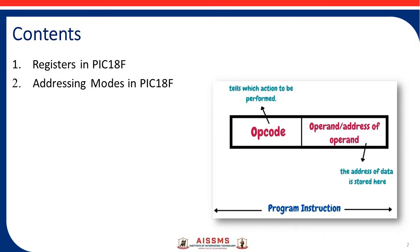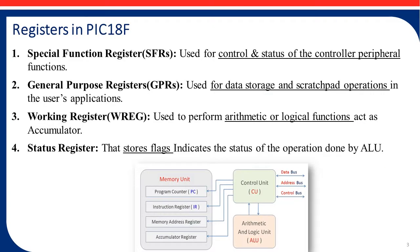So here we discuss registers and addressing modes. Let's see the first registers in PIC 18F microcontroller. There are various registers used. Registers are generally used for storing temporary information in bits format. The first registers are special function register and general purpose register. Special function registers are generally used to store the status of particular peripheral functions and control signals of particular peripheral functions. General purpose registers are used to store scratch pad or temporary information like addition, subtraction, multiplication, or temporary variables used in our program.